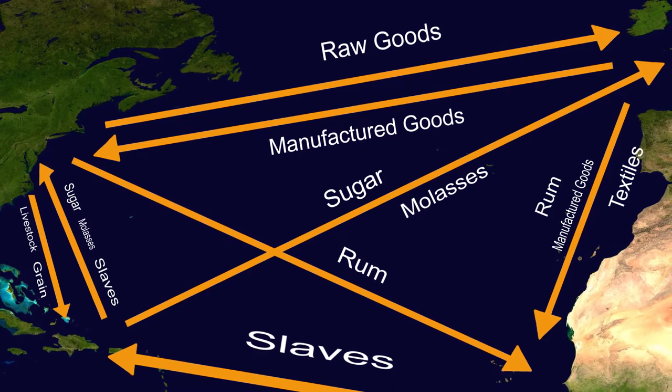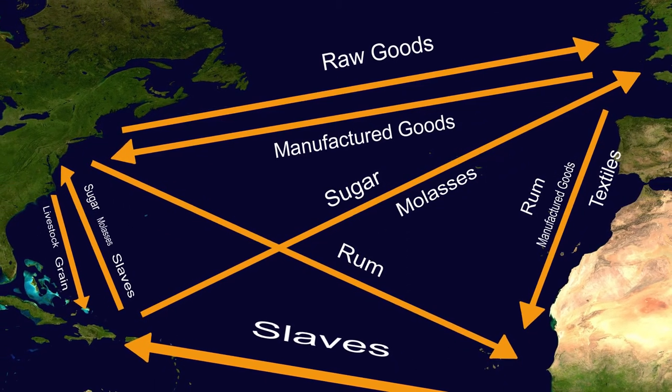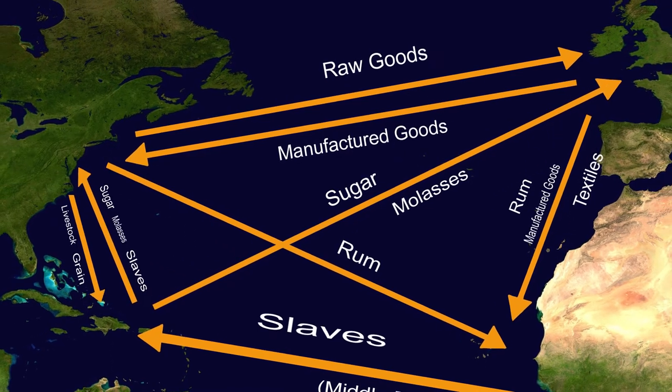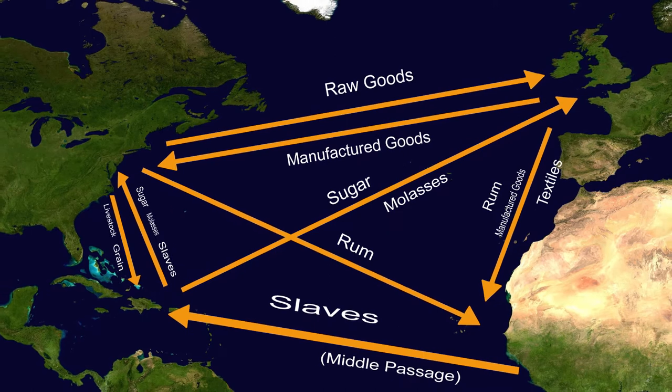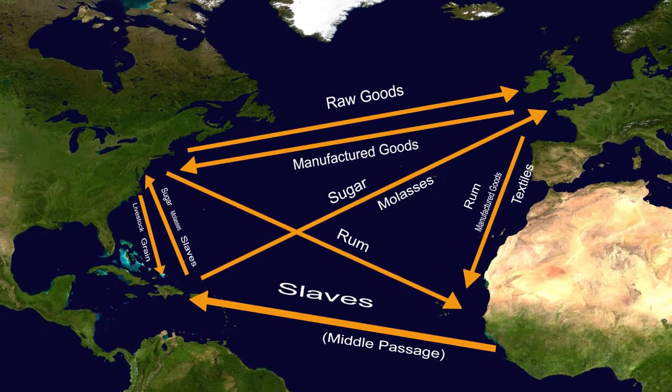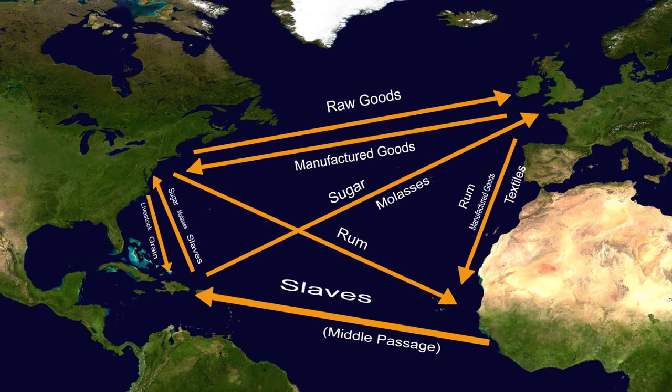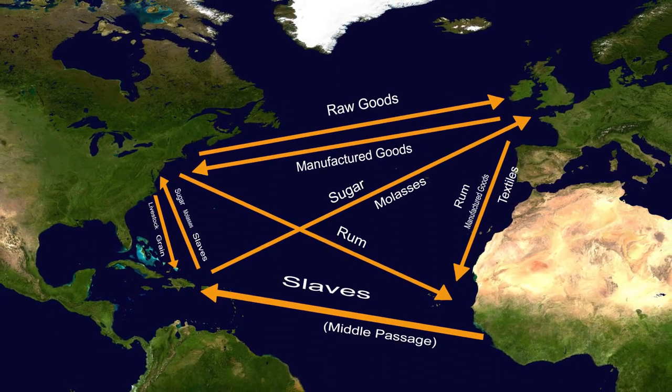This led to a new economic system known as the Atlantic economy, a triangular trading system between European powers in Europe, their colonies in the Americas, and African nations. Products such as tobacco, coffee, and sugar came to Europe from their American colonies. In addition, by the 17th century, European powers had well-established trade routes to Africa and to Asia.